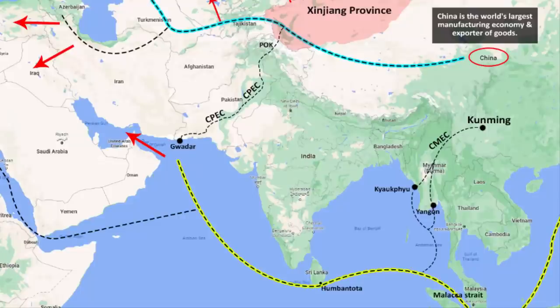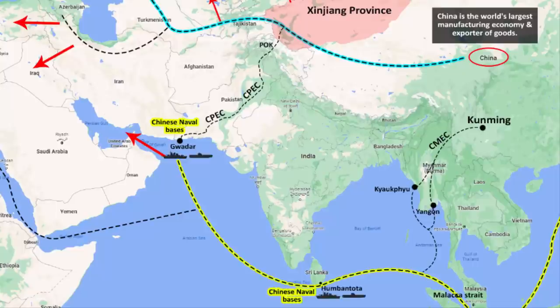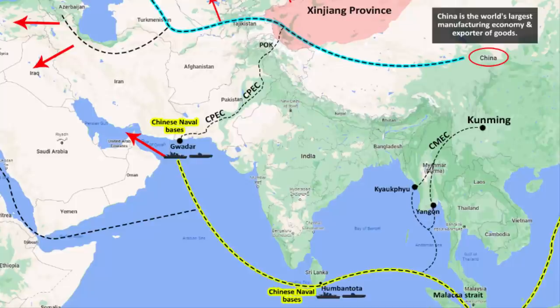Railway lines and roadways of the CPEC project have also been built by the Chinese. Both Gwadar and Hambantota are deep-water seaports, so one should not be surprised if tomorrow China parks its aircraft carriers and submarines there. In future, these seaports will definitely become Chinese naval bases — there is no doubt about that.